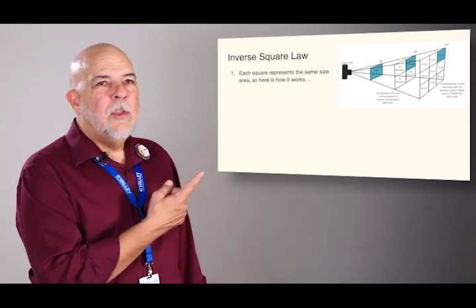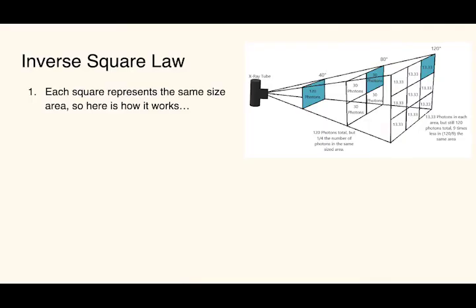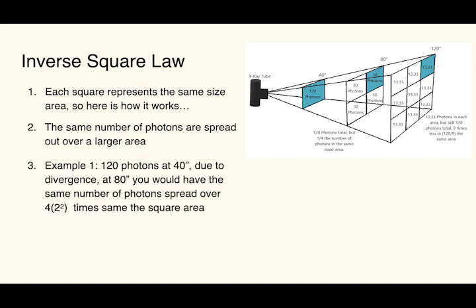So on the graphic you see here, on each of those blue squares, we're going to say they're the same size. So we have the same number of photons in each of the large boxes. So as an example, if we had 120 photons at 40 inches in that blue box you see there, at 80 inches in that same blue box, you would have one fourth of the amount of photons. In the larger box at 80 inches, you would have the same number of photons.